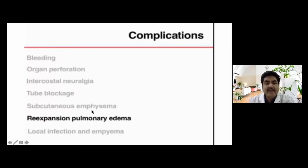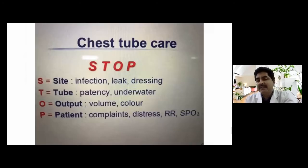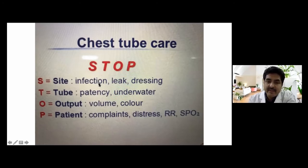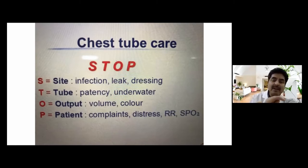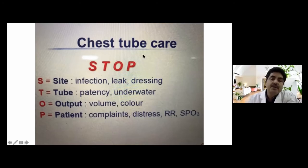For chest tube care, remember the acronym STOP: S for Site — look for infection, leak, and dressing condition; T for Tube — check patency and whether the tube end is underwater; O for Output — calculate volume and color of fluid; P for Patient — assess clinical improvement, respiratory rate, and SpO2. Memorize: site, tube, output, patient.